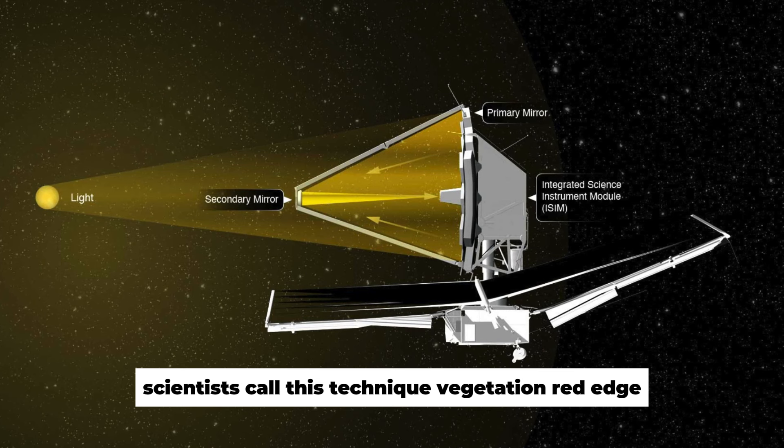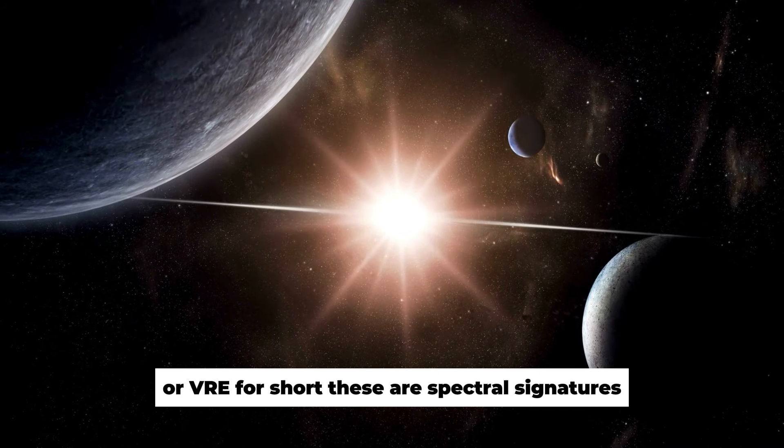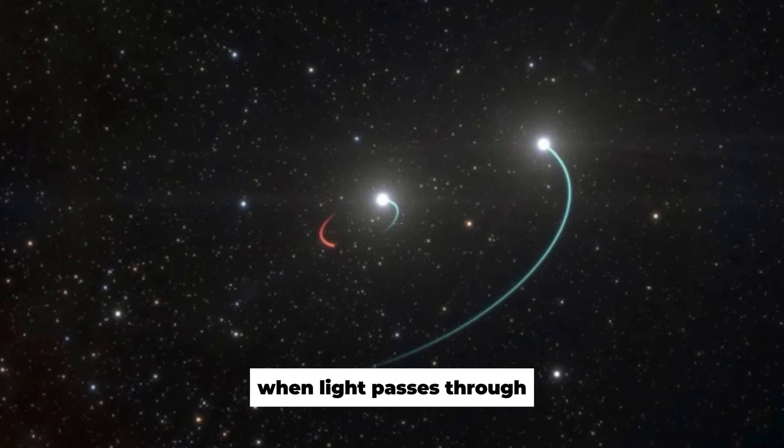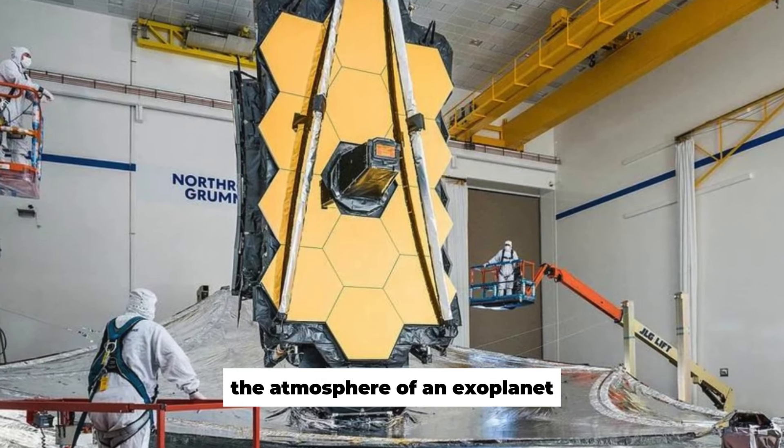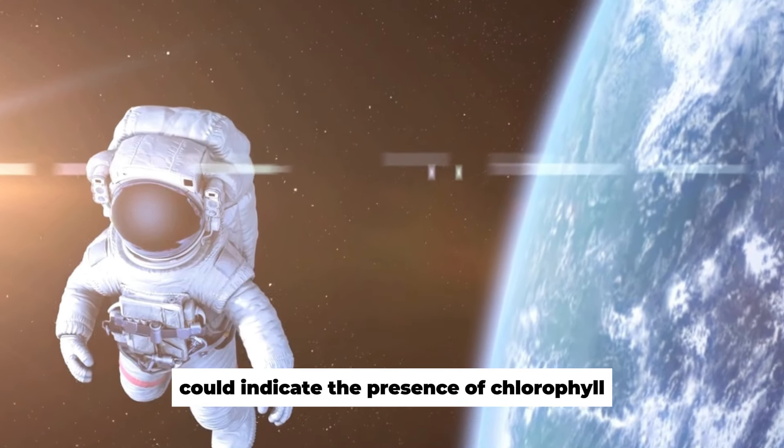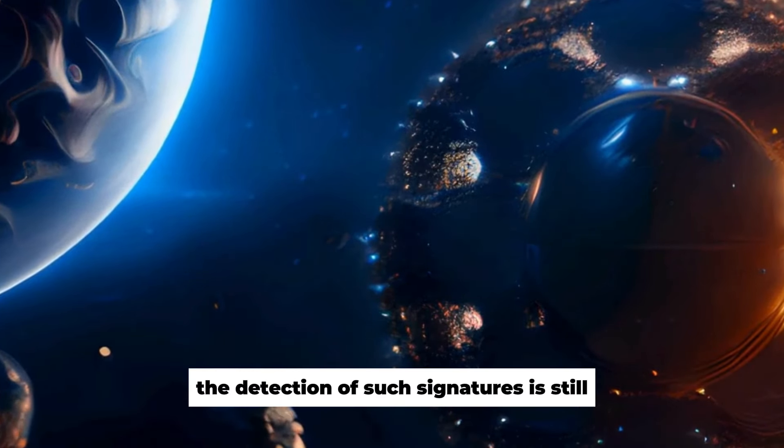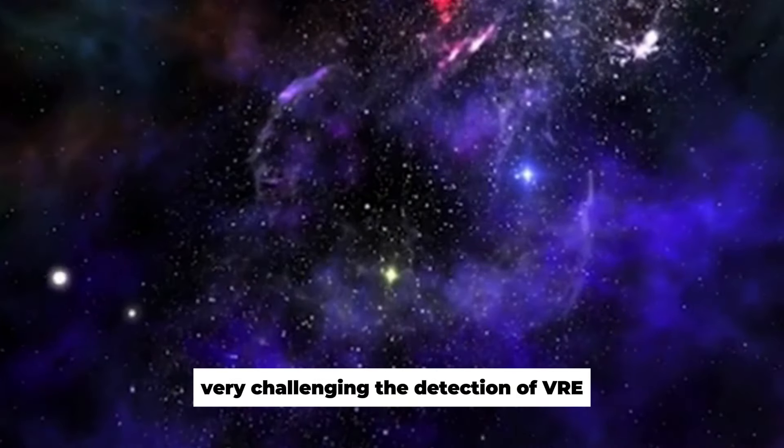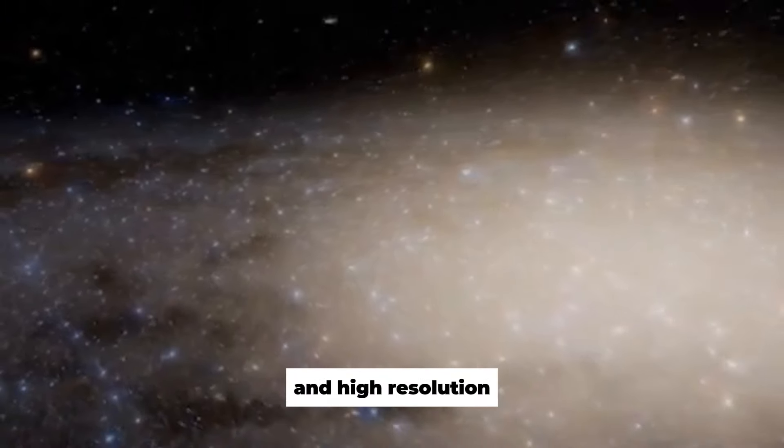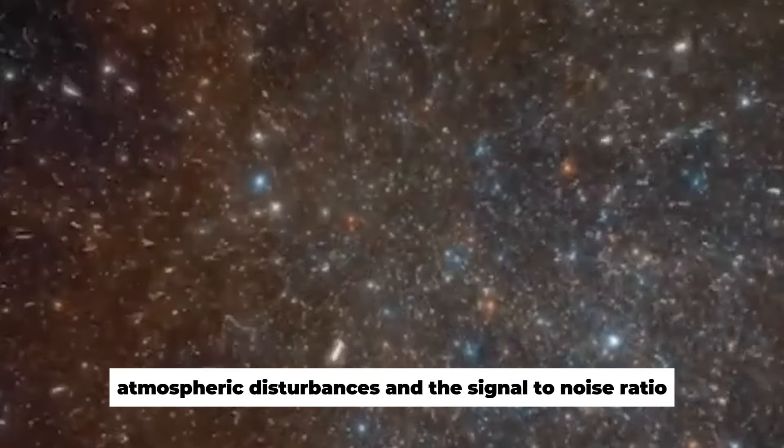The JWST can provide indirect evidence of plant growth by analyzing atmospheric constituents and reflected light spectra. Scientists call this technique Vegetation Red Edge, or VRE for short. These are spectral signatures created by the reflective properties of plants in the near-infrared range. When light passes through the atmosphere of an exoplanet and is reflected by the surface, specific patterns in the reflected light could indicate the presence of chlorophyll or other photosynthetic pigments. The detection of such signatures is still very challenging. The detection of VRE requires extremely precise measurements and high resolution, which can be affected by the exoplanets' atmospheric disturbances and the signal-to-noise ratio.